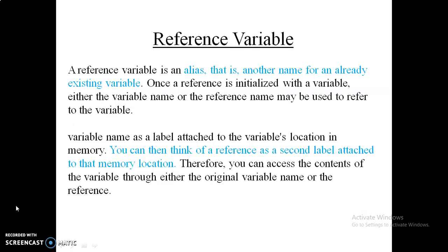Our next topic is the reference variable. A reference variable is nothing but an alias name — another name for an already declared variable. You can access that variable using both names. Both variable names point to the same memory location, so if you change the value using either name, it affects the same memory location. A reference variable essentially gives a different alias name to the same storage location.